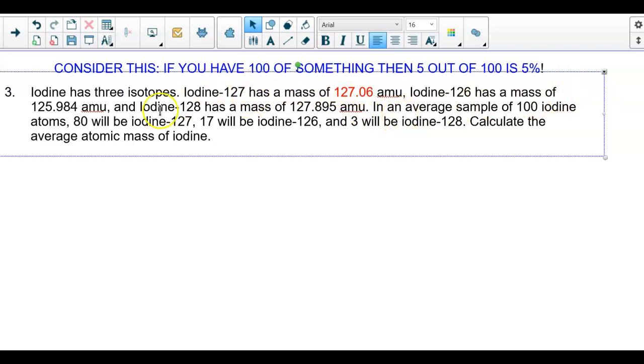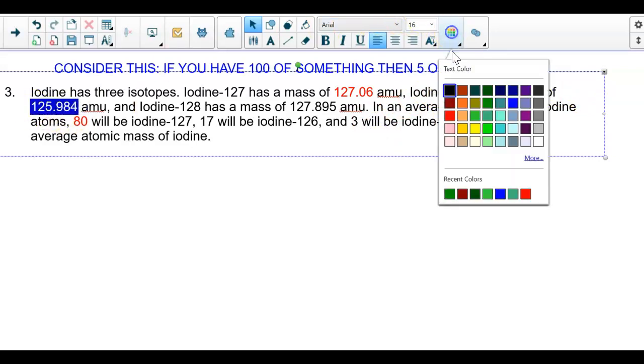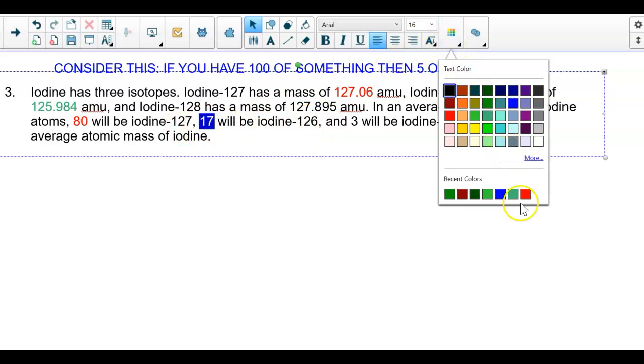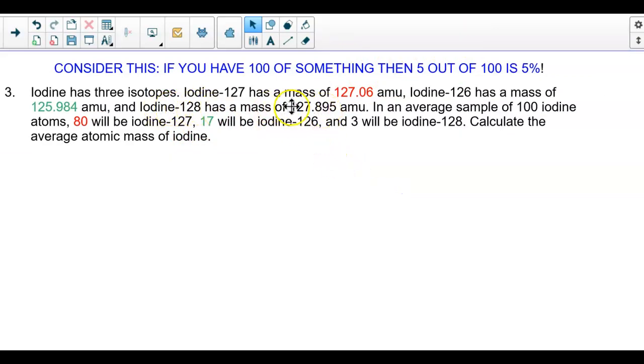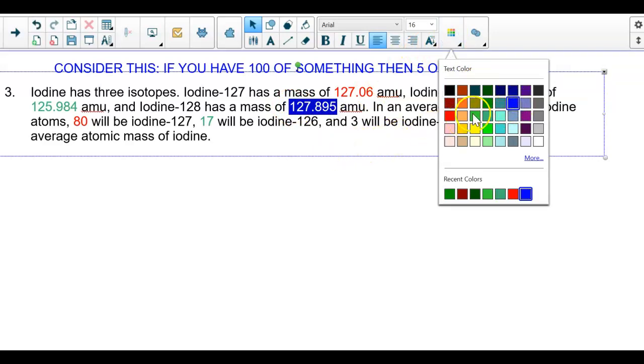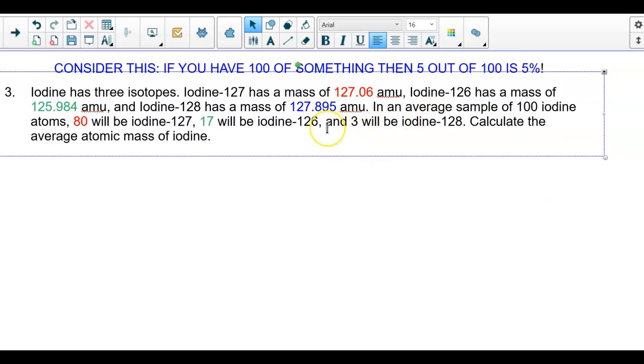As I read the percentages, because it says an average sample of 100 iodine atoms, 80 of them are 127. Well, we knew 127's mass was this. So the 80 is going to be that percentage, 80 out of 100. I read 126 has a mass of this, and 17 of them are 126. And then I see there's iodine-128, and there's not always three, I know these last few examples have had three. There could be more, there could be two, all the way up to, I've seen some have 10 or 15 different isotopes. So 17 comes from 126, and we know three comes from 128.